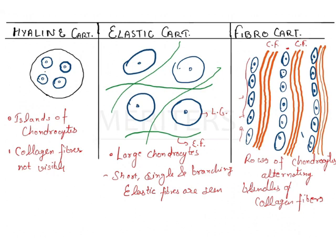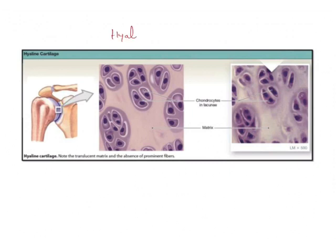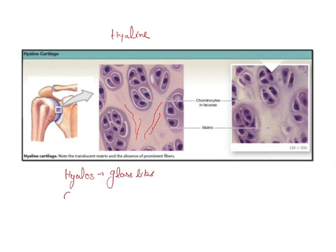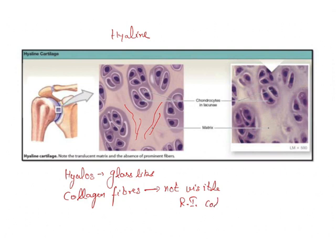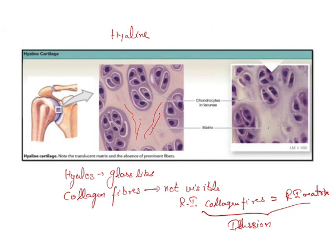Looking at hyaline cartilage in more detail: you don't see any fibers here, and the whole matrix looks like hyalose — that is, glass-like — which is what 'hyaline' means. The collagen fibers are not visible because the refractive index of the collagen fibers equals the refractive index of the matrix, causing an illusion that the fibers are absent.